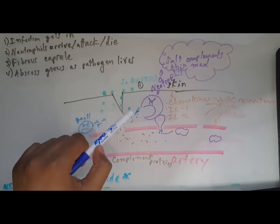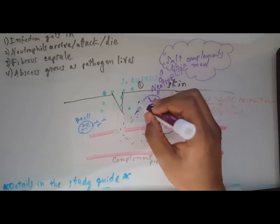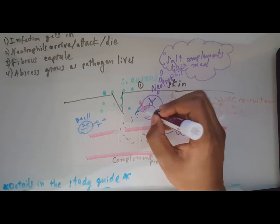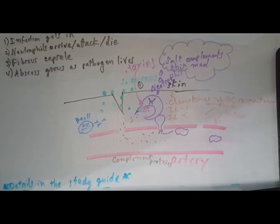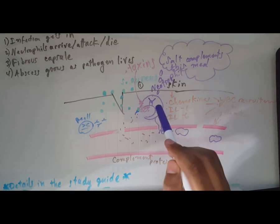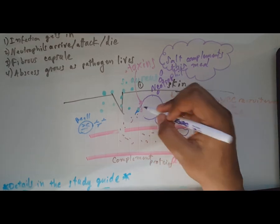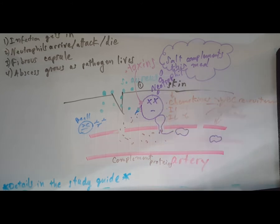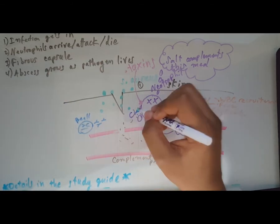Staph aureus secretes a lot of factors that help it stay alive - it secretes toxins and proteins that block phagocytosis. So now instead of being able to eat the staph aureus, this neutrophil dies.